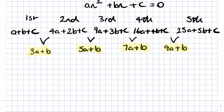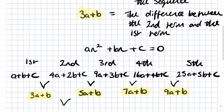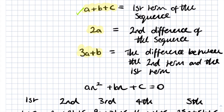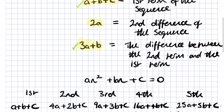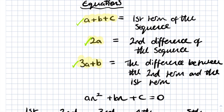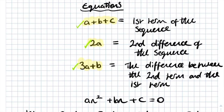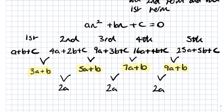Now we find the second difference. Taking 5a plus b minus 3a minus b — the b's cancel — leaving 2a. The next second difference is also 2a, and the next is also 2a. This confirms our second equation: the second difference of the sequence equals 2a. Now we have all three equations derived, so let's look at some examples.